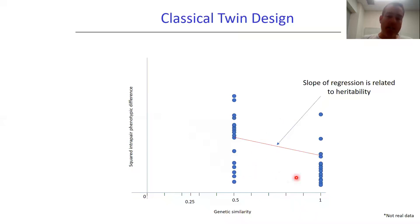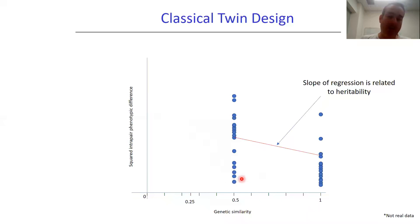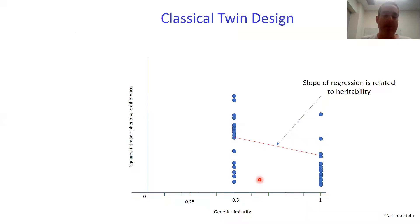You'll notice also that the spread of values is much greater with the classical twin design — all the way from one over to 0.5. That gives you some intuition as to why the classical twin design is much more powerful for estimating the narrow sense heritability, whereas with the GCTA GREML approach you've got this tiny spread of values all centered around zero.